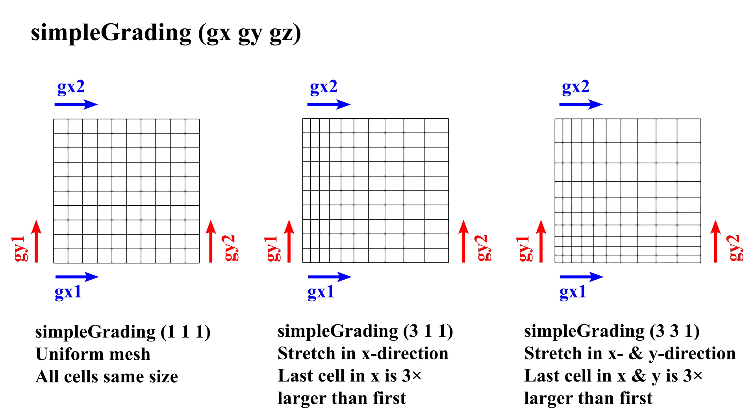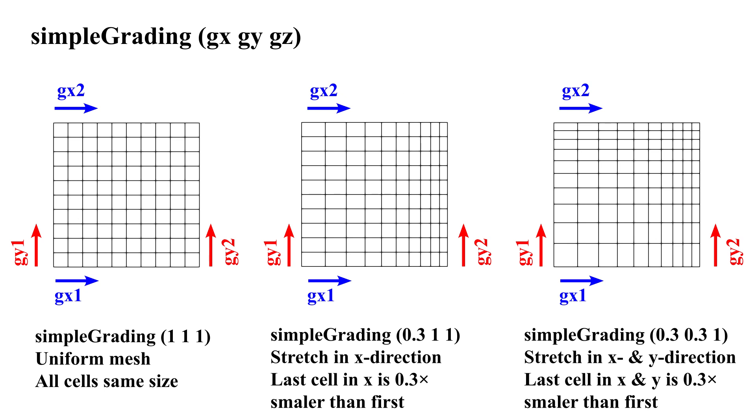Simple grading is a quick way to define how the cell sizes grow or shrink along each direction: X, Y, and Z inside a block. For example, if we set the value to 1 in X, Y, Z, it creates a uniform distribution where all cells have the same size. But if we use a value like 3, for example, in X direction, it means that the last cell along X will be 3 times larger than the first cell. We can also reverse the distribution by using a value less than 1.